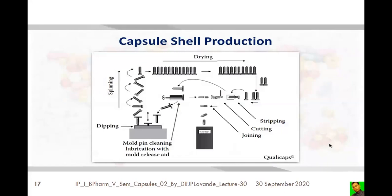To produce a capsule, we require the capsule shell, and inside the shell the API — the medicinal substances — are to be loaded. This is the schematic representation for the overall process of capsule shell production. The capsule shell is the outer covering inside which the medicinal substance or formulation remains. This schematic passes through five or six different stages.